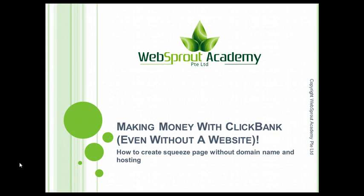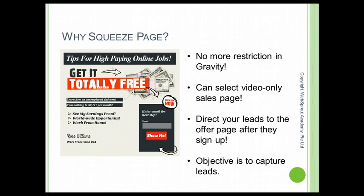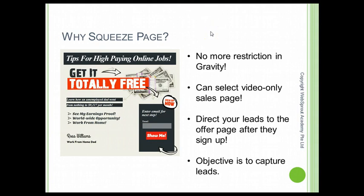I'm going to teach you how I build this list and how you can do the same using the concept of what I call a squeeze page. Here's an example — the title says 'Tips for High Paying Online Jobs,' which is a ClickBank offer. When people click on my advertisement in Bing Ads they see this page, and when they enter their email and click, it directs them to the ClickBank offer.